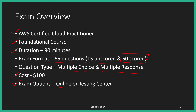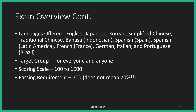Most folks prefer to give the online exam because you give it from the comfort of your home. This exam is offered in multiple languages — English, Japanese, Korean, Chinese, and much more. The target group is basically everyone, as we discussed — really anyone can give this certification. The scoring scale is from 100 to 1000 and the passing requirement is 700, so you need 700 points out of 1000 to pass.